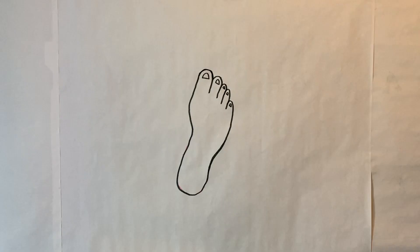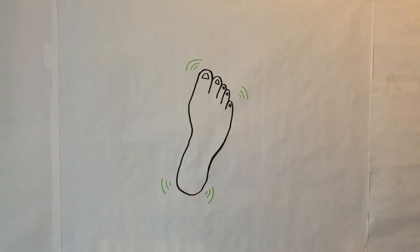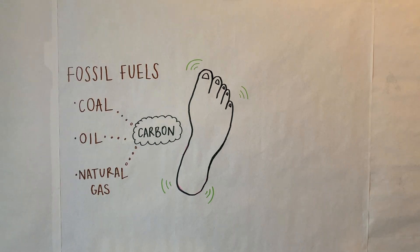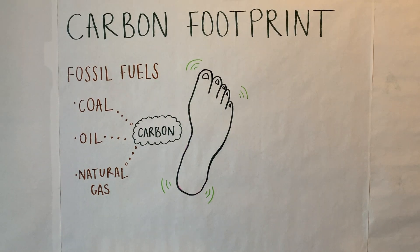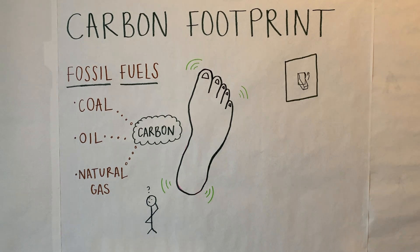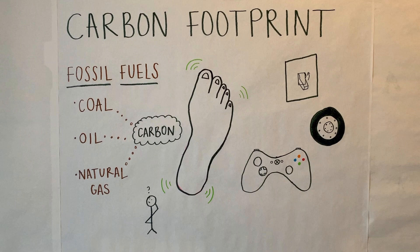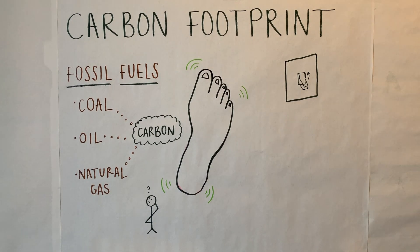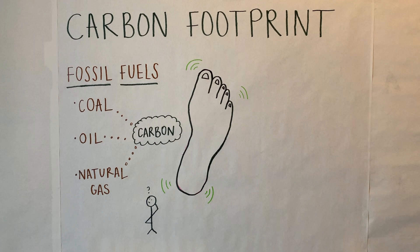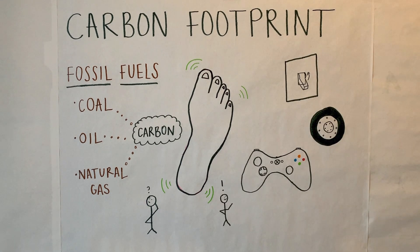A carbon footprint — is that the footprint left by a robot? Not quite. A footprint is a mark you leave by walking, but the way you use energy also leaves a mark. Carbon is created when we use fossil fuels like coal, oil, or natural gas. So your carbon footprint essentially refers to the amount of fossil fuels you use. Many of the things you do on a daily basis — like turning on the lights, riding the bus to school, or playing video games — are actually using fossil fuels. It's good to be aware so we can use them less and leave a smaller carbon footprint.